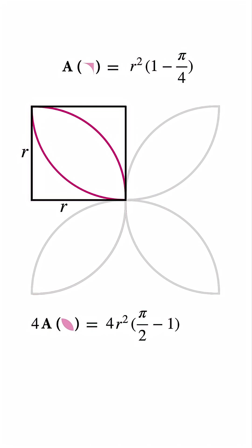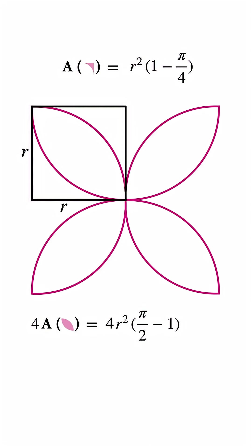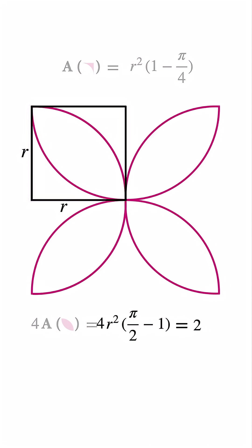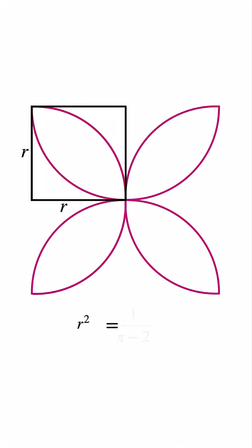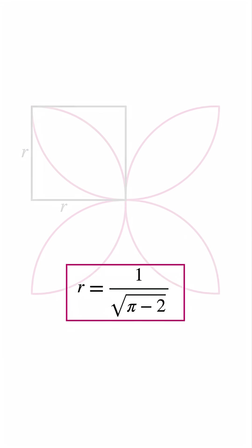Multiply by four, because the flower has four petals. The problem tells us that this equals two. Now solve for r, and that gives you the radius of the flower.